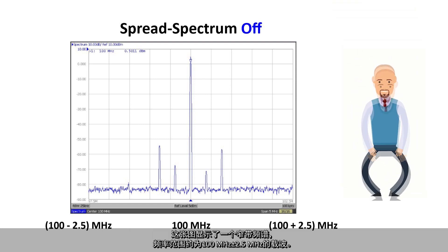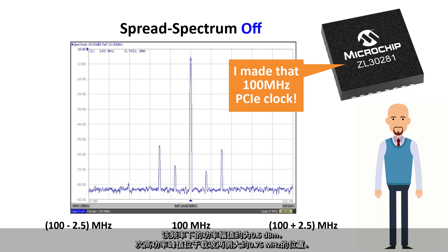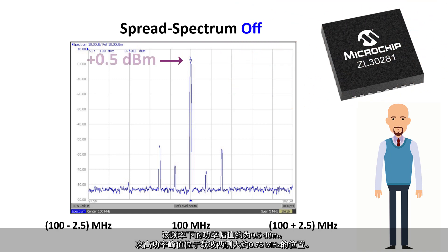This plot shows a narrow band of the spectrum, about 2.5 MHz above and below the 100 MHz carrier. The power amplitude at that frequency is 0.5 dBm or so. The next highest power peaks are located approximately 0.75 MHz on either side of the carrier.